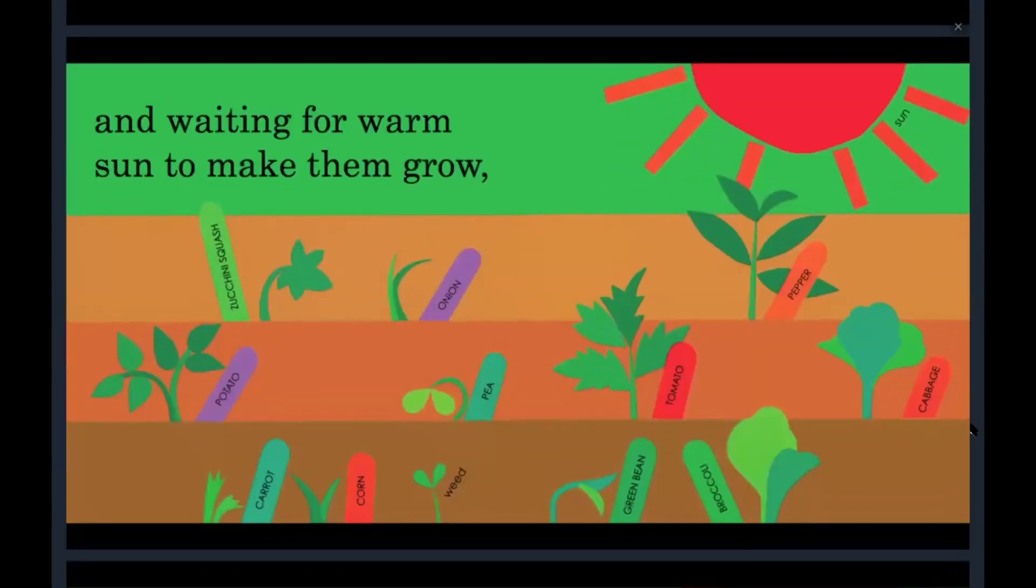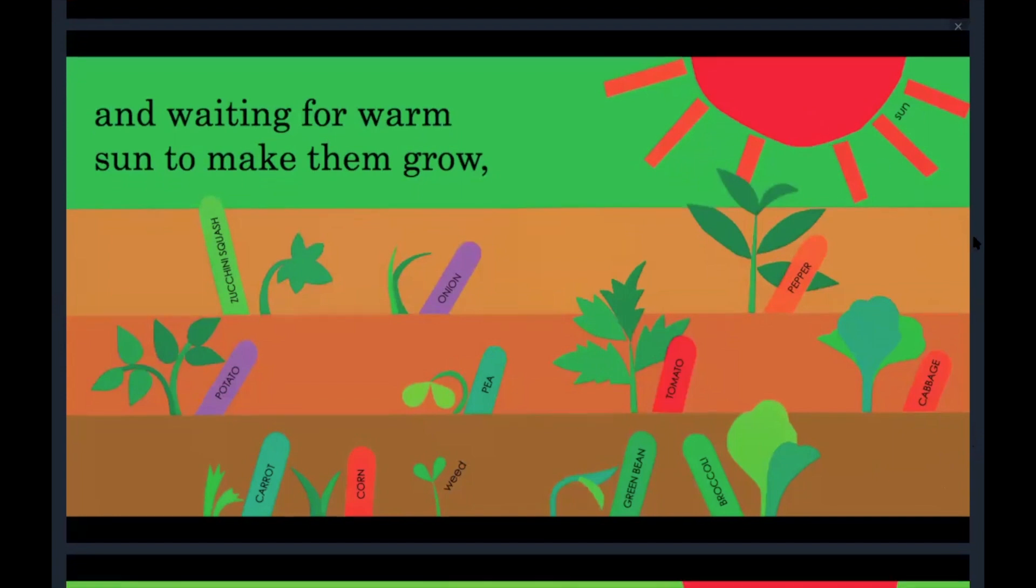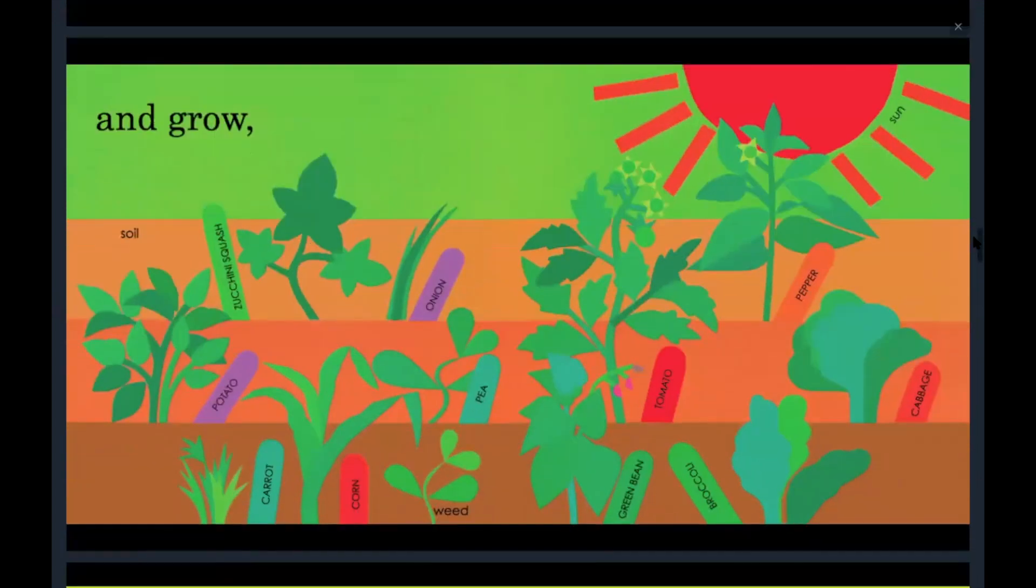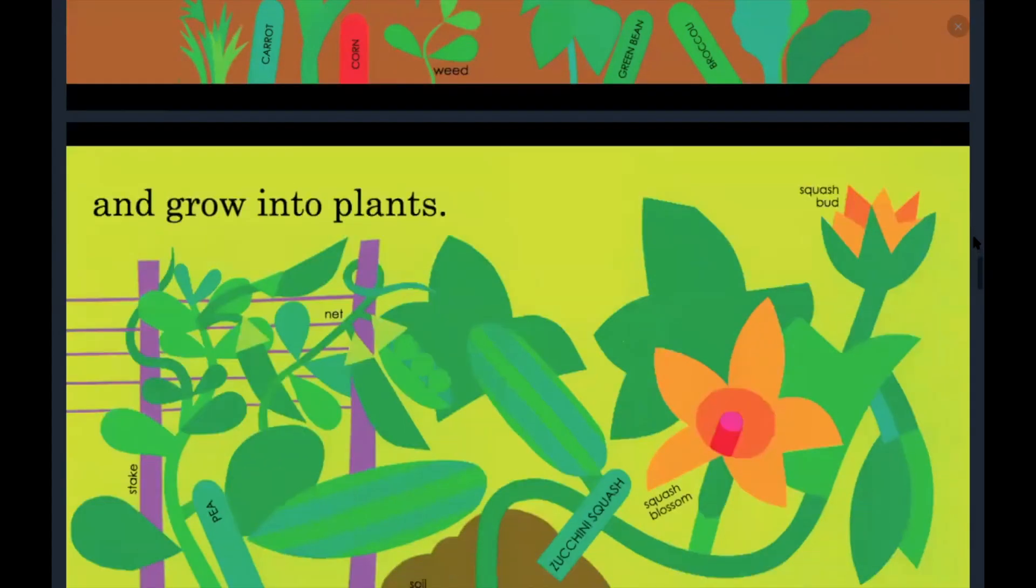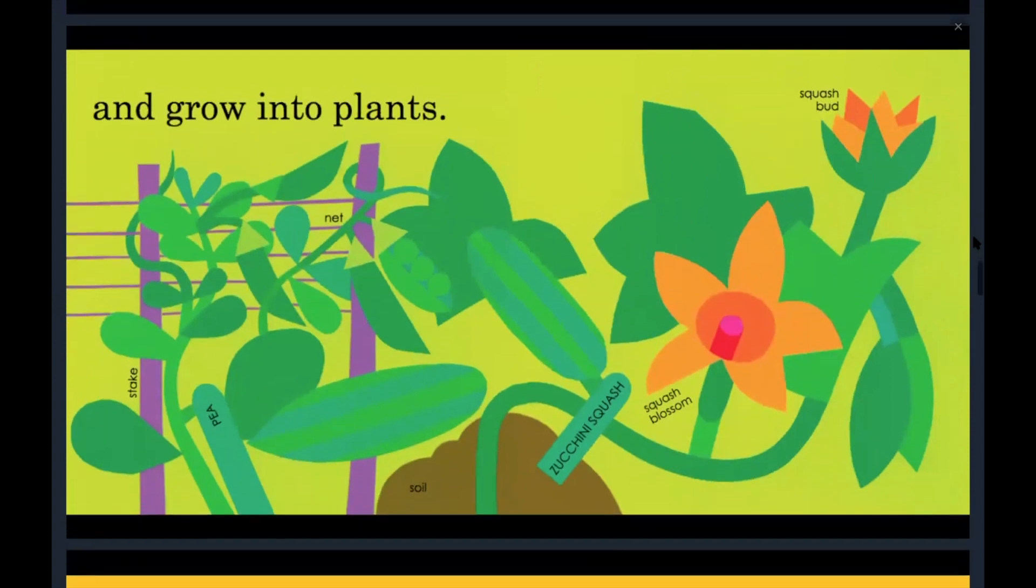And waiting for the warm sun to make them grow. So remember plants need soil and warm sun and water so that they can grow. And grow, they're getting bigger, and grow into plants.